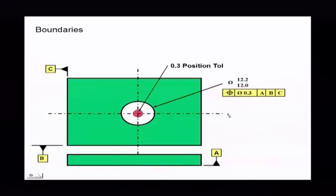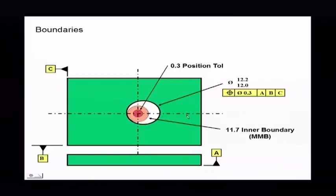When you look at this, that hole at the smallest size of 12 can be off position 0.3. So we can move it here, it could be here, it might be there, it could be here, it could be all these different places. And notice as it moves around, it never enters that space right there.